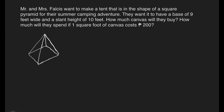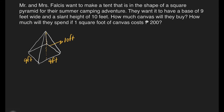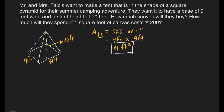Our given: we have a base of 9 feet by 9 feet, and a slant height of 10 feet shown here. Since we're looking for the surface area, we find the area of the base first. The formula is S times S, or S squared. One side is 9 feet, so 9 times 9 equals 81 square feet. This is the area of our base.